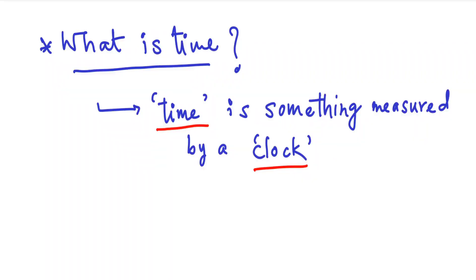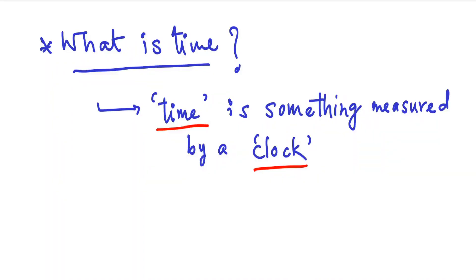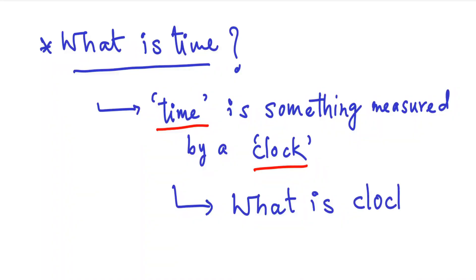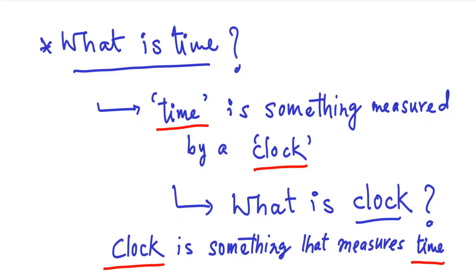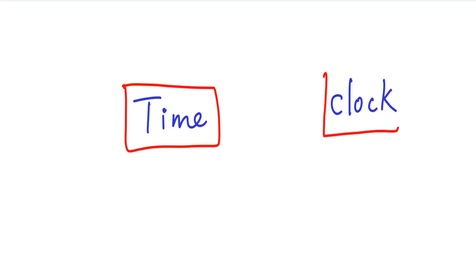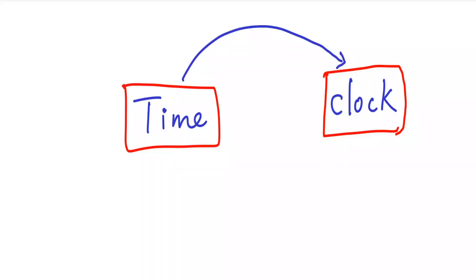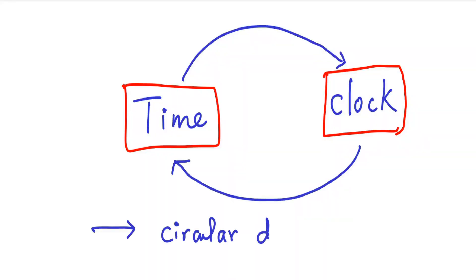However, you may have noticed that there is a problem. In order to define time, I have used the concept of clock, which I have not defined. So how do I define clock? I can try again — a clock is something that measures time. To define time, we have used the concept of clock, and to define the clock, we have used the concept of time. It is an example of a circular definition.